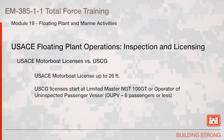U.S. Army Corps of Engineers motorboat licenses versus U.S. Coast Guard licenses: the Corps licenses motorboats up to 26 feet, while U.S. Coast Guard licenses start at limited master of 100 GT or Operator of Uninspected Passenger Vessel (OUPV) of six passengers or less.